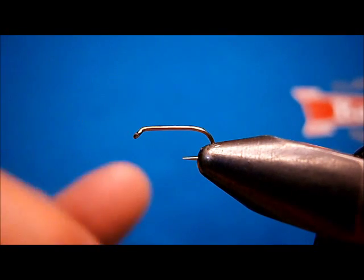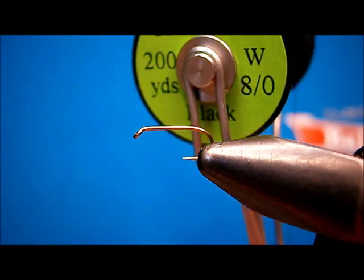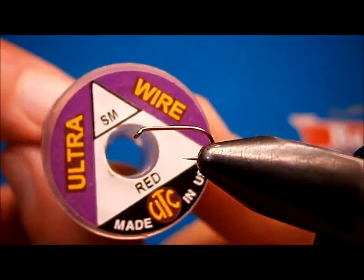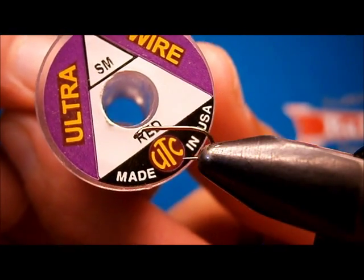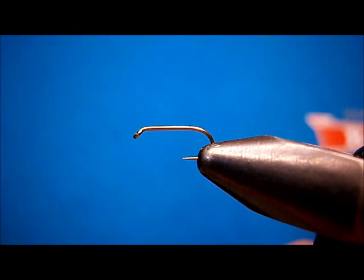The hook I have here in the vise is a Dachi 1560. We're going to be using the Uni ADOP black again. For ribbing, we're going to be using UTC small red wire. And for the thorax area of the fly, it's going to be gray muskrat.